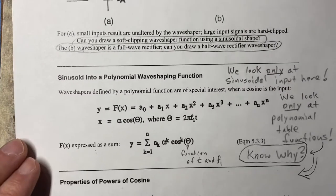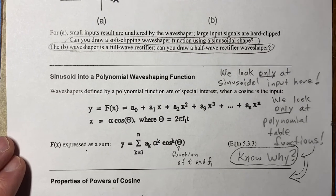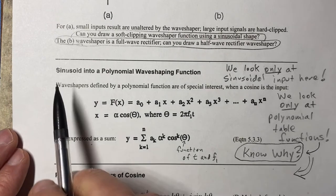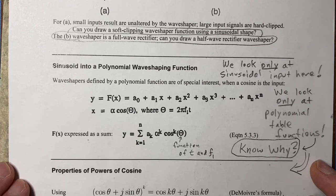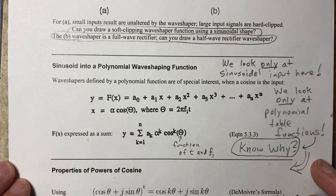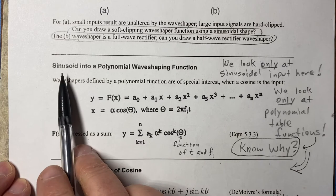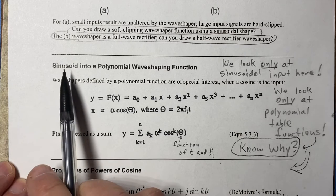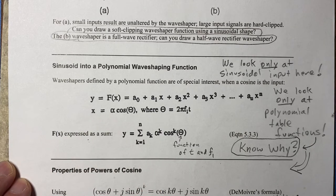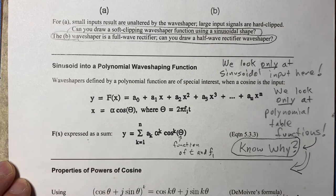If we pick our input to be a sinusoid and use a polynomial wave shaping function, then things work out very nicely. This is a topic that Professor Beauchamp, my predecessor here at U of I, and others have worked on extensively. Just listening to a sinusoid is not so interesting, but if you put it through the right polynomial wave shaping function, you can get interesting harmonics — quite a beautiful sound, something much more interesting than just a sinusoid.